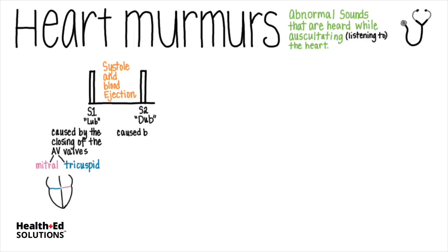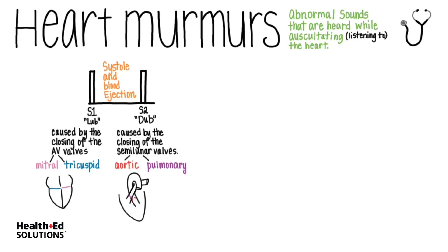S2 is caused by the closing of the semilunar valves at the end of systole. The aortic and the pulmonary semilunar valves close at the same time. This closing marks the start of diastole and ventricular filling that occur after S2 and before the next S1.